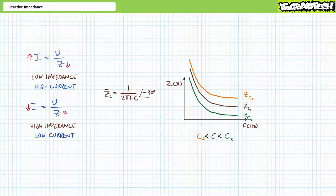That about wraps it up for capacitors. We learned why current leads voltage for capacitive elements and how frequency and capacitance influence impedance. Let's do the same thing for inductors. It's really more of the same, except we're dealing with magnetic fields instead of electrostatic fields, lagging current instead of leading current, and impedance magnitude that increases as a function of frequency and component value instead of decreasing. Inductors are the opposite of capacitors, and vice versa.